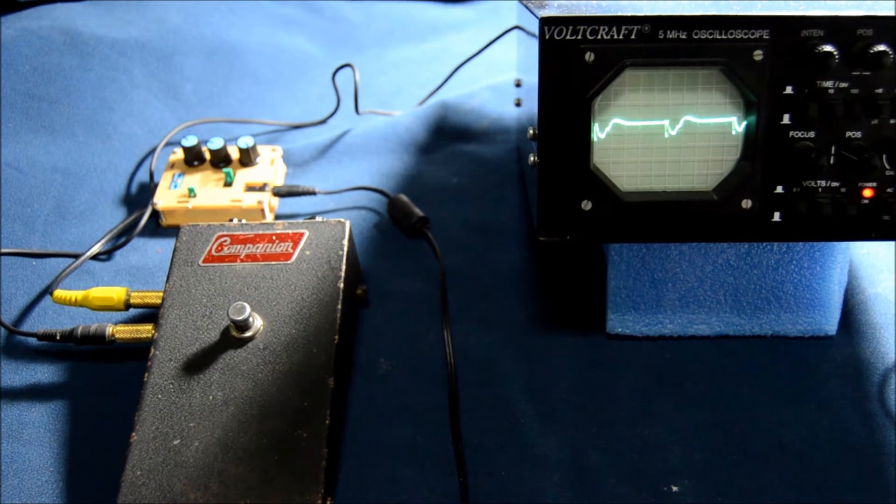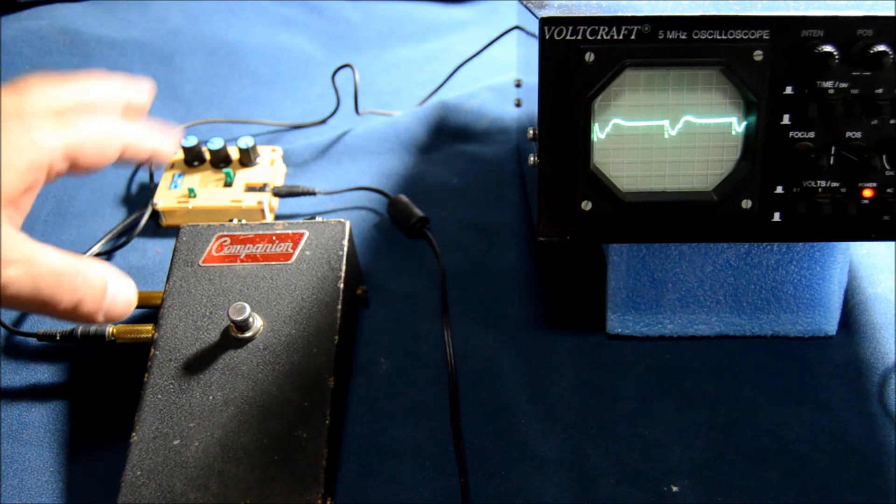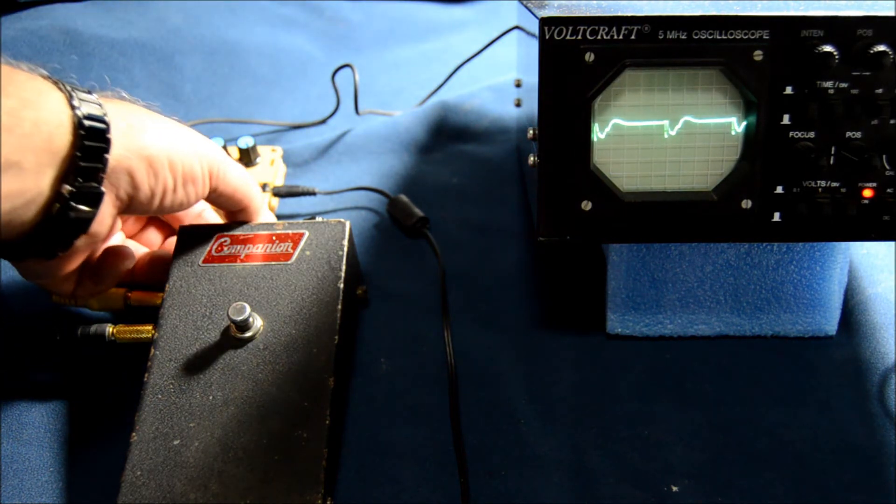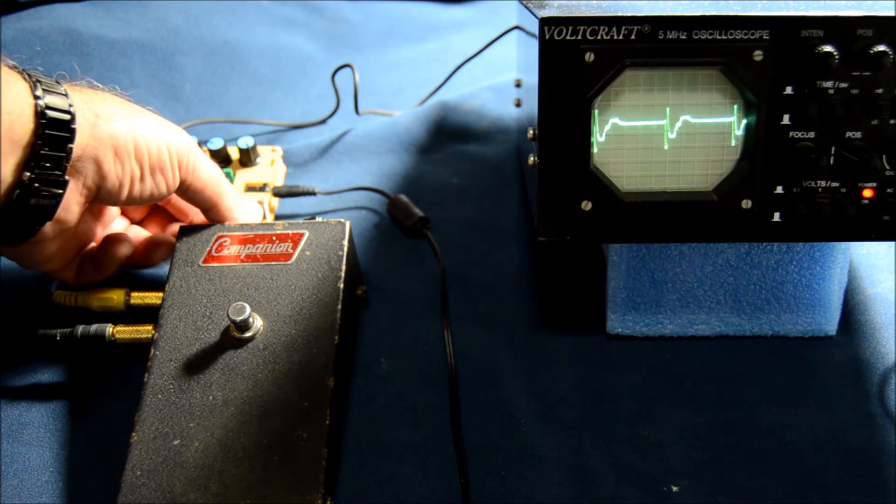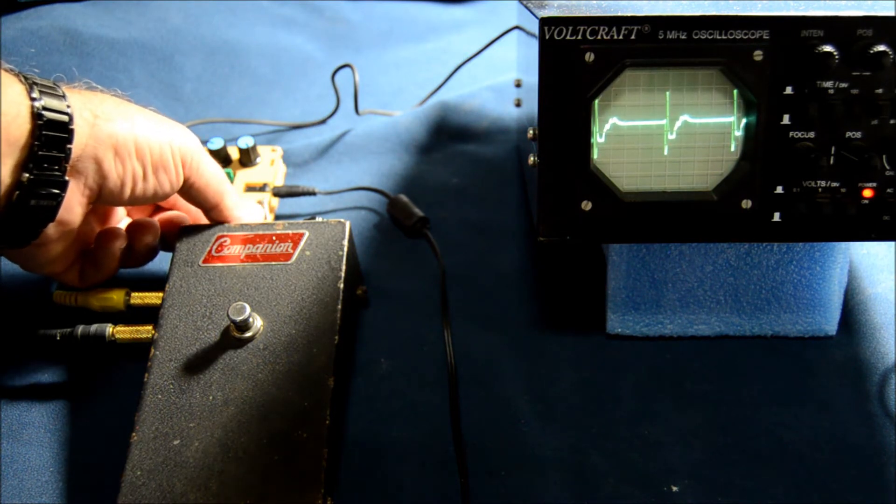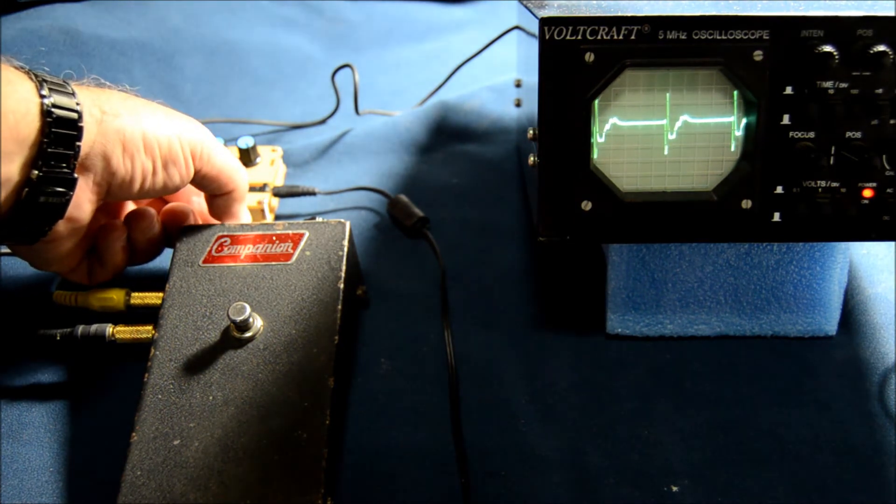The next one is a Companion C9 fuzz. This pedal is supposed to have a very square waveform sound, but we see on the oscilloscope that it's quite different. This is with the fuzz on zero. If we adjust the fuzz and raise it, it's an even more complicated waveform.